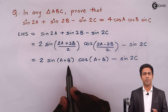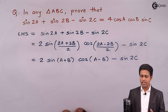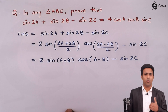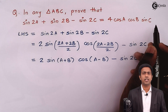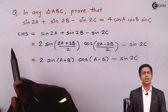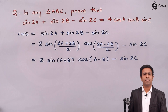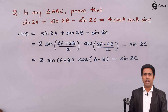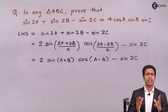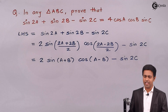Do not apply the compound angle formula expanding sine(A plus B) as sinA cosB plus cosA sinB, or else you will have to solve more terms and won't arrive at the right hand side. Instead, it's time to use the property of angles of triangle. In triangle ABC, the sum of all angles is 180 degrees, or pi radians.